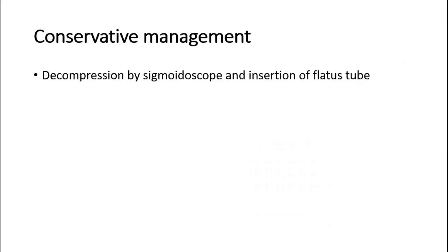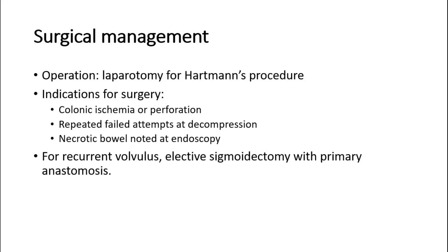Most patients with sigmoid volvulus are treated conservatively initially, with decompression by sigmoidoscope and insertion of a flatus tube. Surgical management is laparotomy for Hartmann's procedure. Indications for surgery are colonic ischemia or perforation, repeated failed attempts at decompression, or necrotic bowel noted at endoscopy. For recurrent volvulus, elective sigmoidectomy with primary anastomosis may be performed to prevent recurrence.